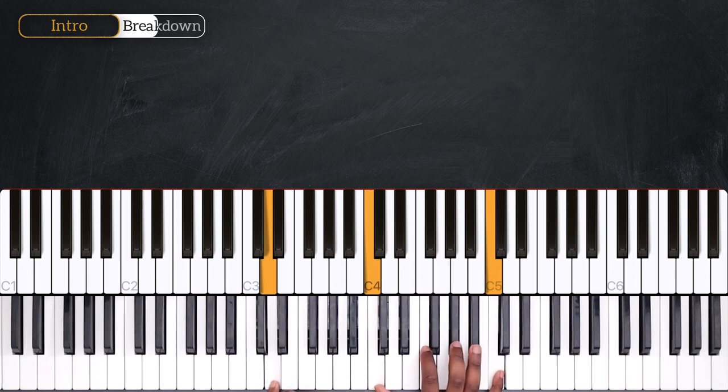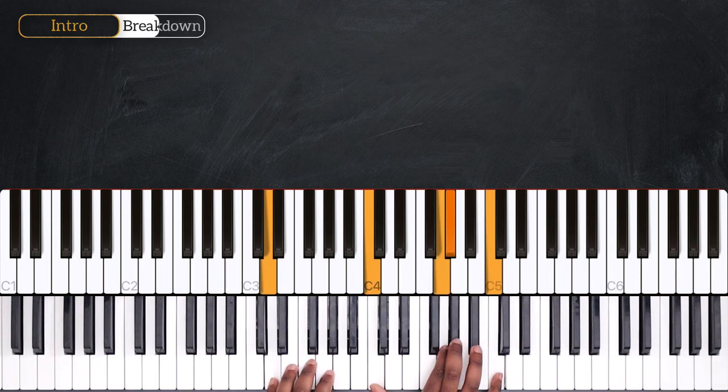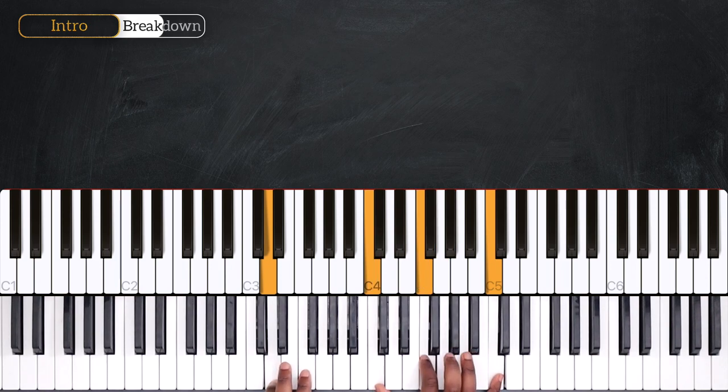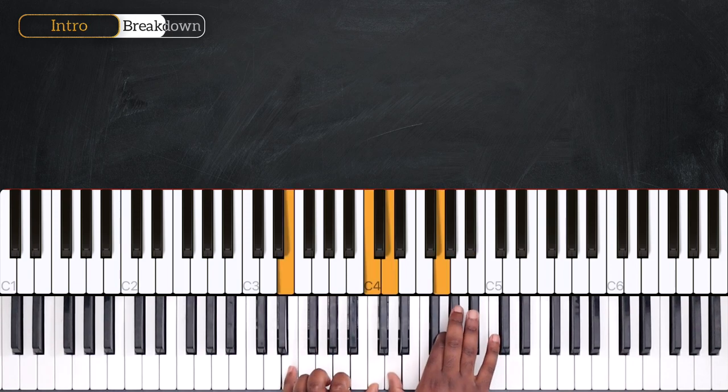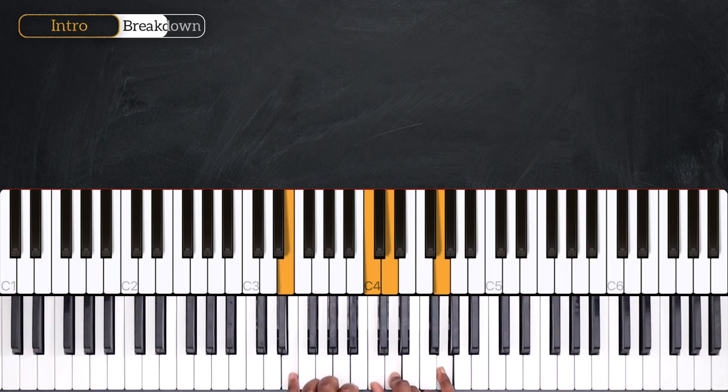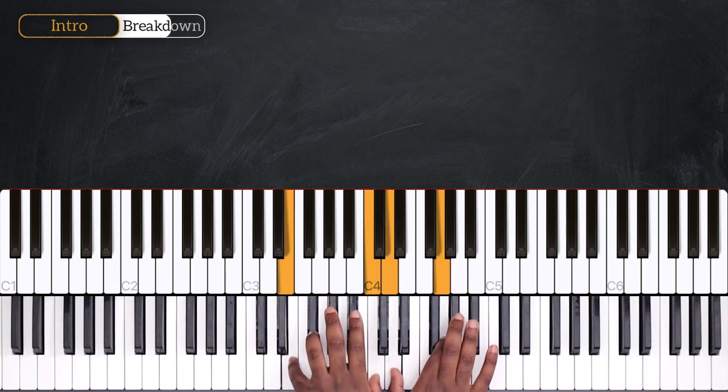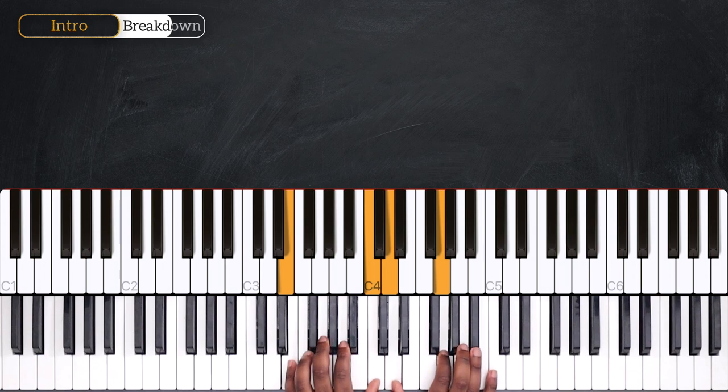Again, from F minor. And then, back on C over E. Now, playing Csus2, C add 2 with E on the bass. And before that, I'm playing Bb, then Ab, and then the chord. So, E and C on the left. D and G right hand.